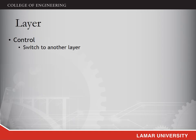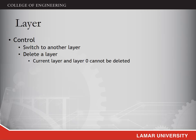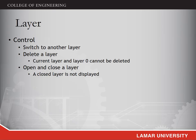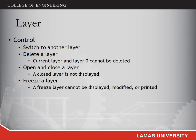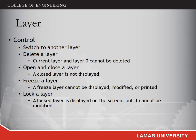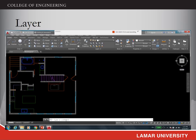AutoCAD also provides some advanced functions for controlling layers. If you have a design with multiple layers, you can switch which layers are displayed on the current screen. All defined layers can be deleted, except the current layer and layer 0, which is the base layer — these two cannot be deleted. You can decide whether to open or close a layer; a closed layer will not be displayed. A frozen layer cannot be displayed, modified, or printed. Similarly, you can lock a layer — a locked layer can be displayed but cannot be modified. If you decide not to print a layer, it will be locked for the printer.